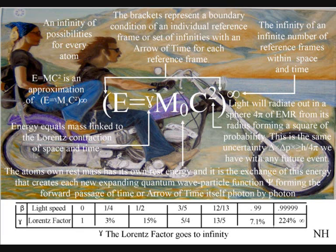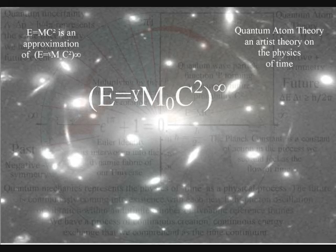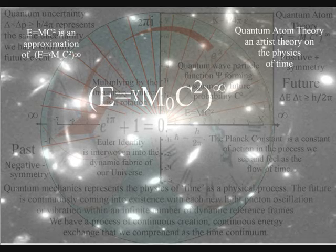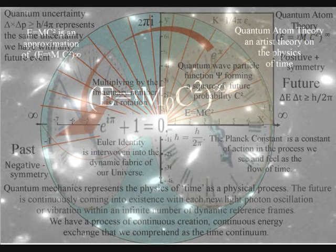This is formed by the surface area of the sphere that forms a two-dimensional boundary condition. The infinity symbol represents the whole universe as an infinite number of dynamic reference frames that are continuously interacting, forming the uncertainty of everyday life.